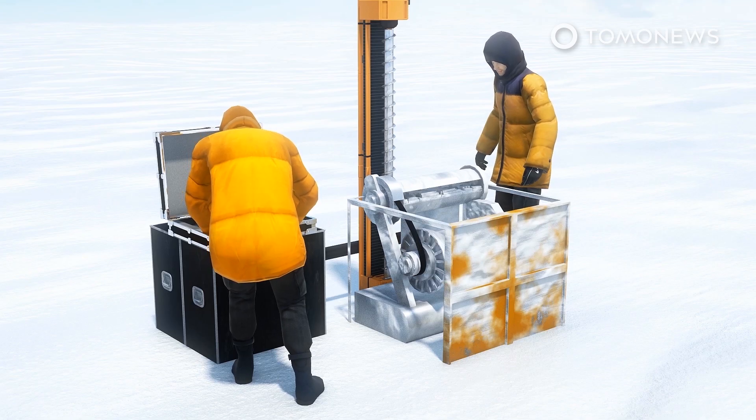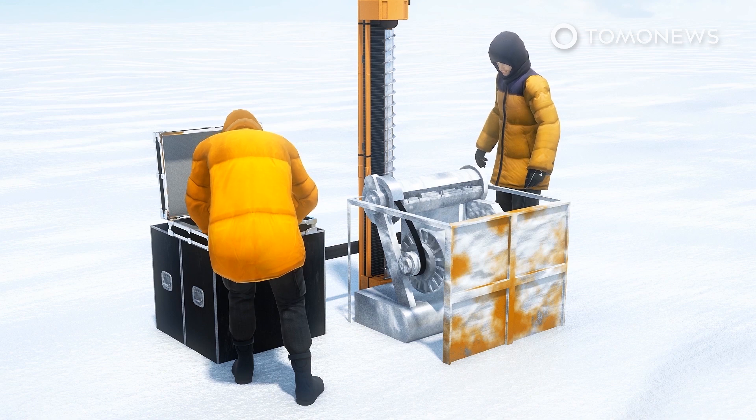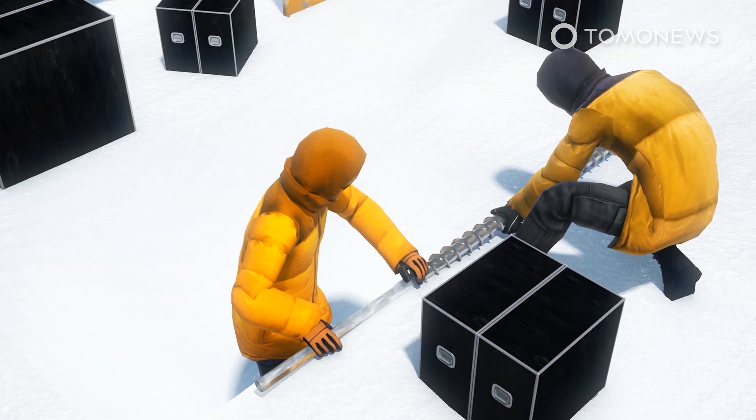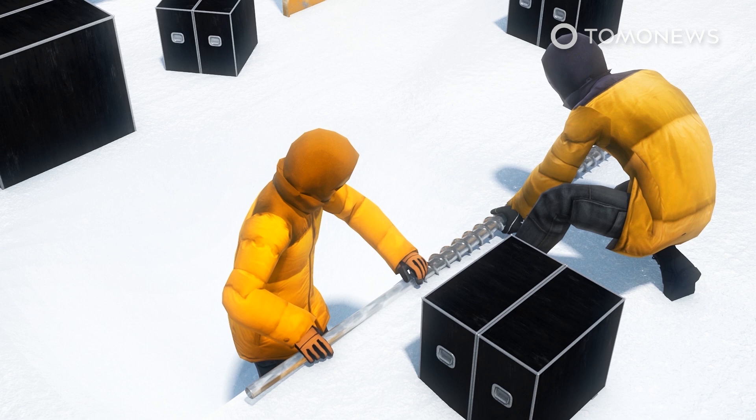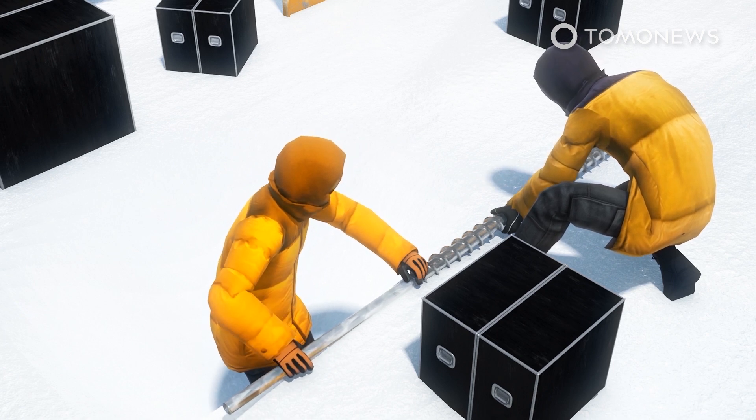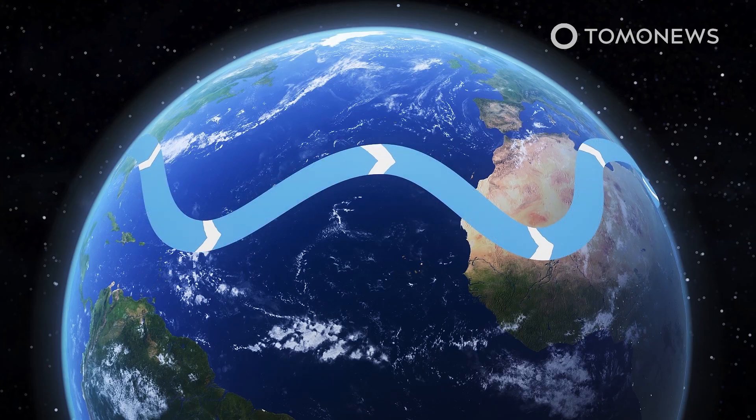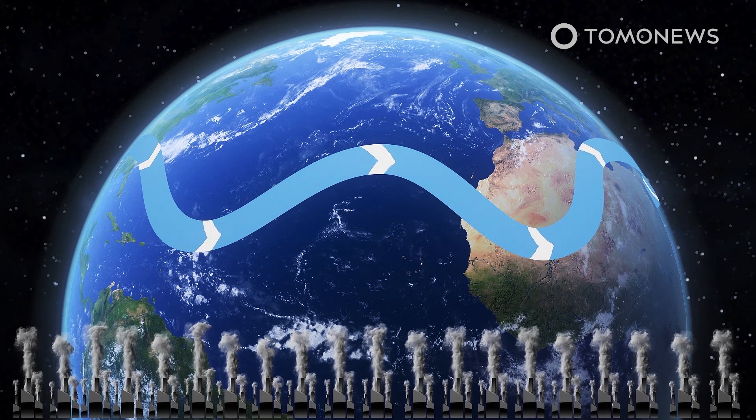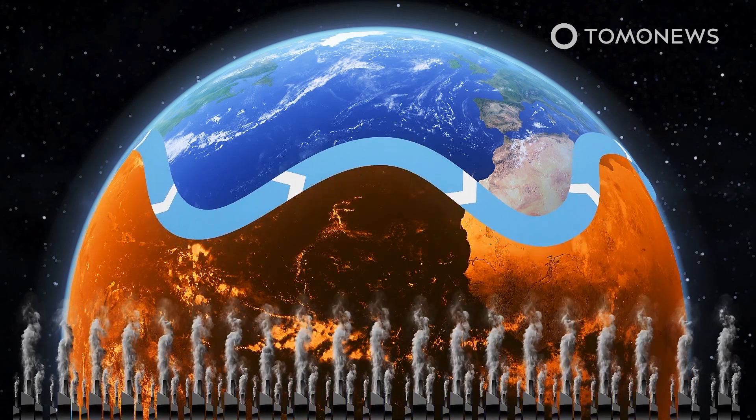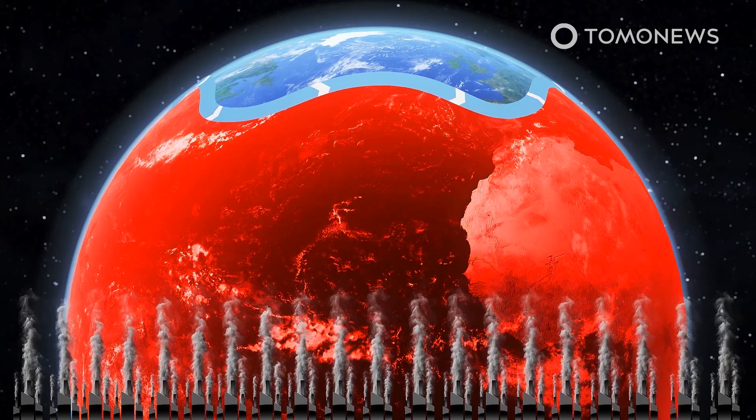From this, they calculated the past positions and intensity of the powerful air current and said that while the current fluctuations in the jet stream's position and intensity are still within historic bounds, their calculations indicate that the weather-controlling air current would migrate northward by 2060 if greenhouse emissions continue at the current pace.